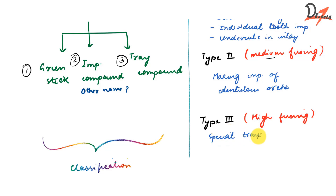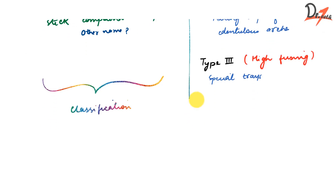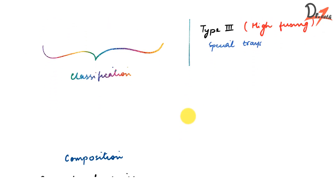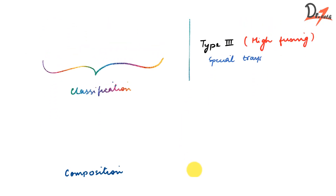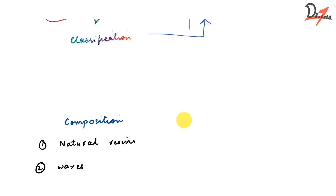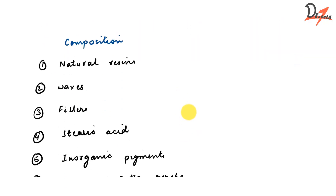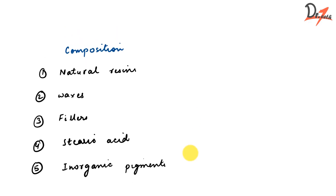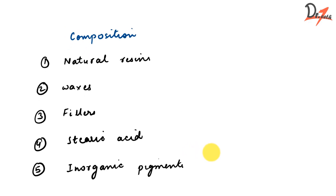Type 3 (high fusing) is used for making special trays on which we can take the final impression, as already mentioned. That completes our classification.